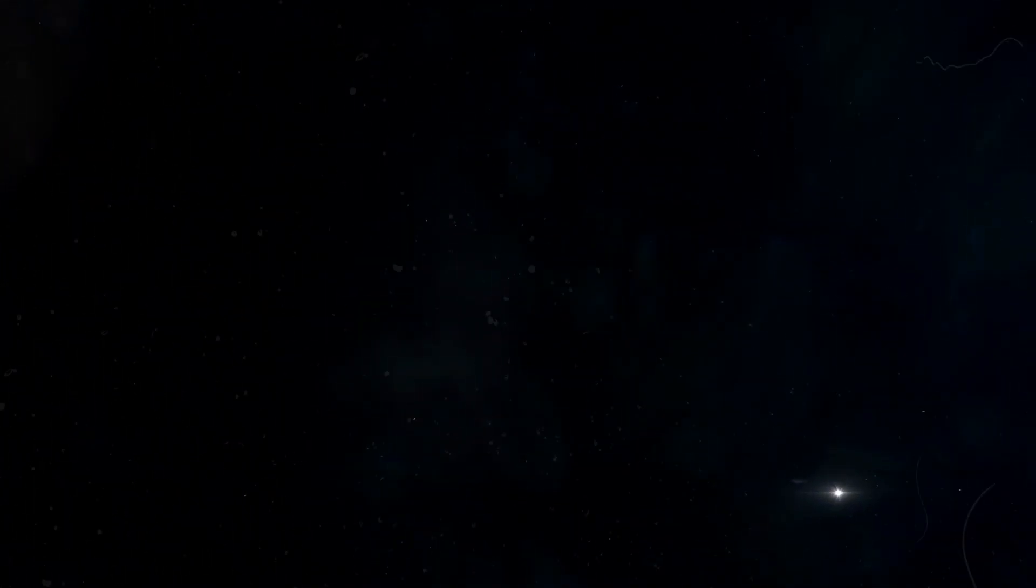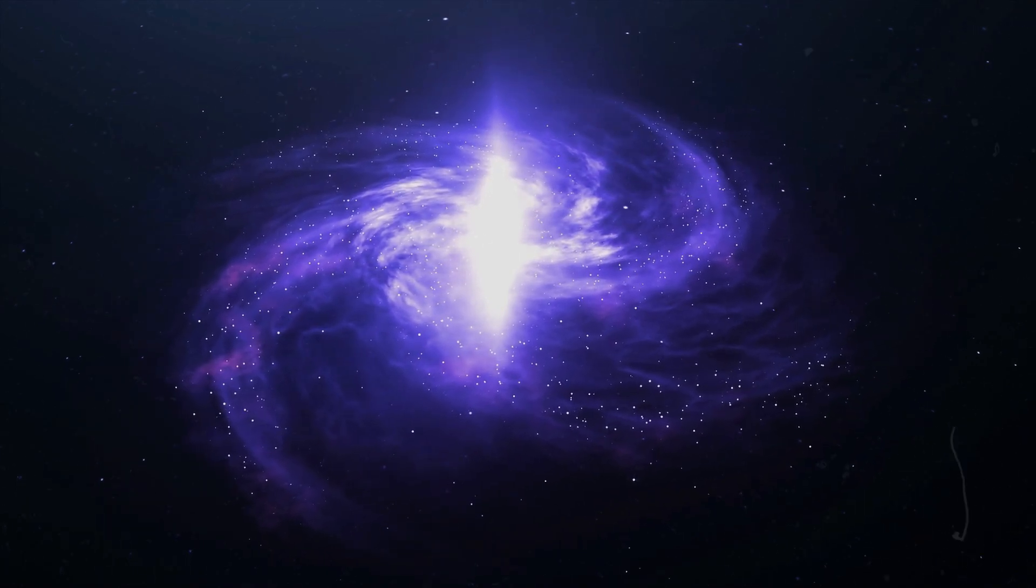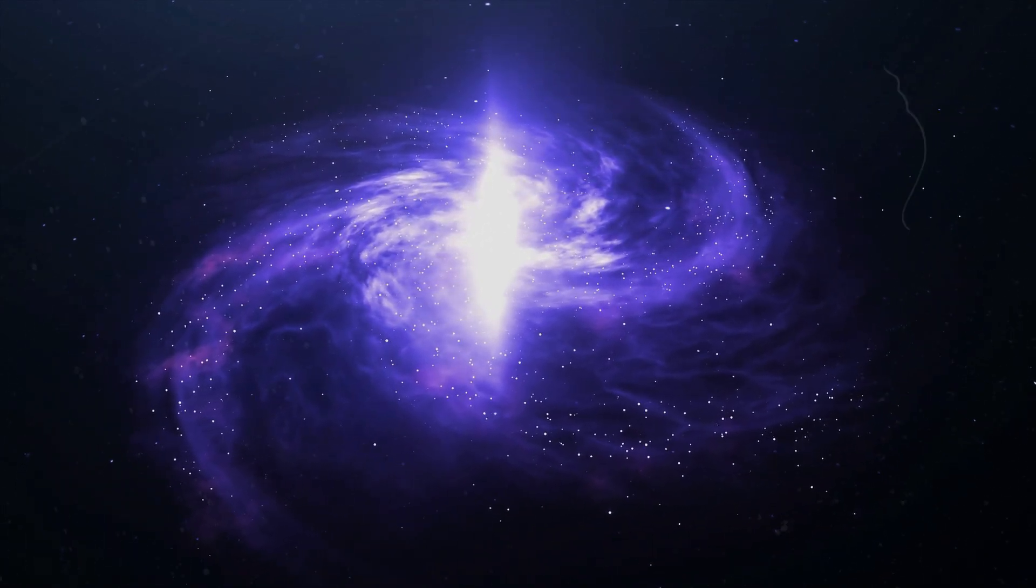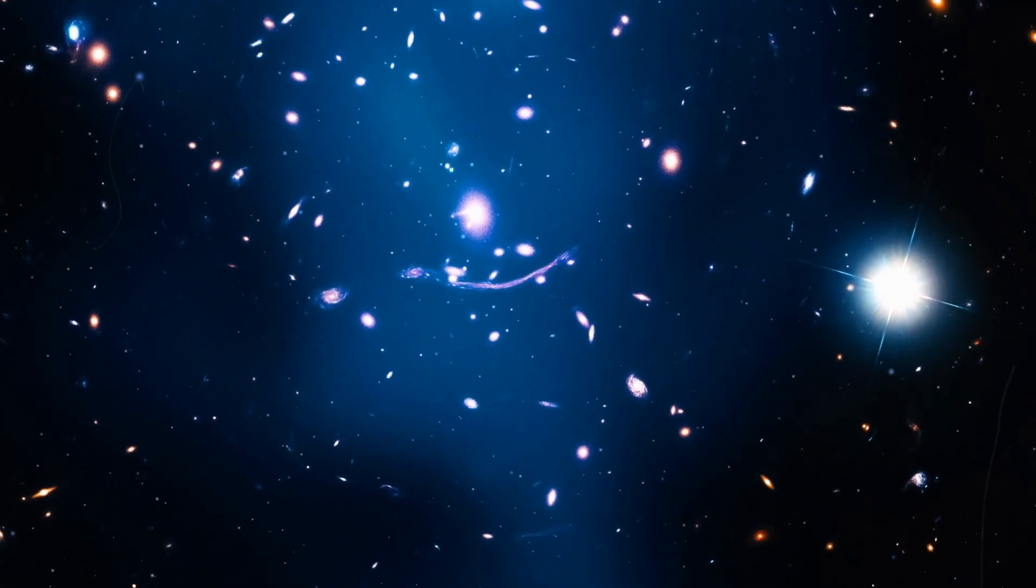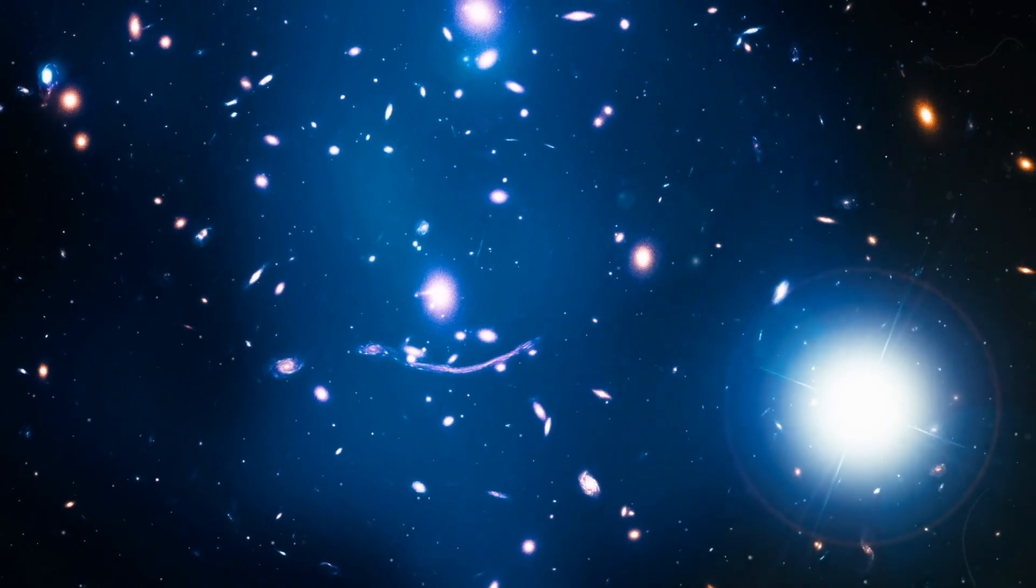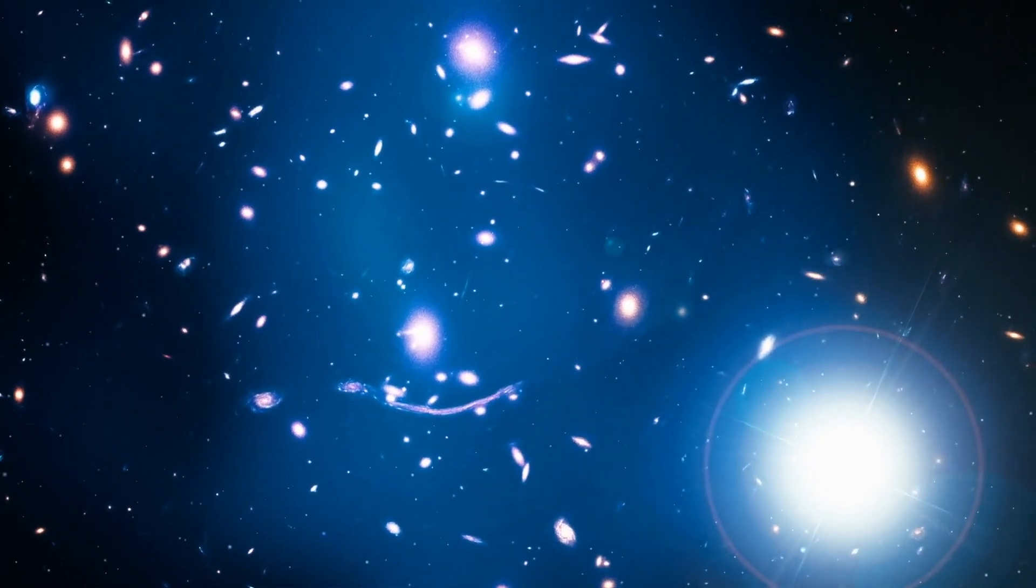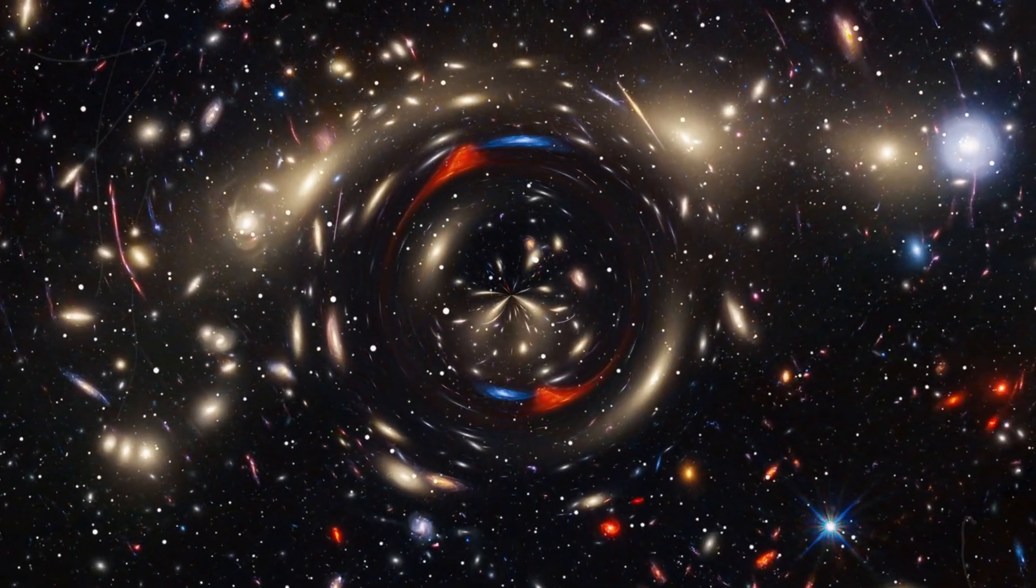These behemoths, comprising predominantly light elements, dwarfed contemporary stars in both size and luminosity but burned out within a mere few hundred thousand or million years. Webb's scrutiny reveals within these nebulous patches a multitude of stars, numbering in the millions or even billions. This contradicts the antiquated notion of a handful of colossal stars coalescing to form protogalaxies.